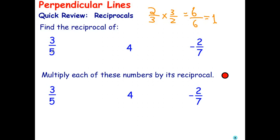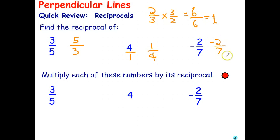What's the reciprocal of three over five? Well, we swap the numerator and denominator and we get five over three. What's the reciprocal of four? What's the reciprocal of negative two on seven? Well, let's write that first with the negative sign on top, and then the reciprocal of that is going to be seven on negative two. But a better way to write that would be to put the negative sign in the numerator — positive divided by negative is negative, negative divided by positive is a negative — so you can put the negative sign on top.